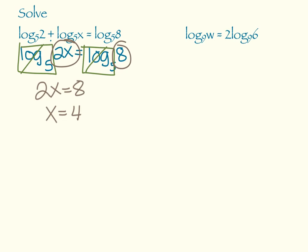Now let's solve this one. Log base 9 of w equals 2 log base 9 of 6. You can't just drop the logs because the 2 is in your way. However, knowing your power property, log base 9 of w equals log base 9 of 6 to the second power. So now I can drop the logs, and w equals 6 squared, which is 36.